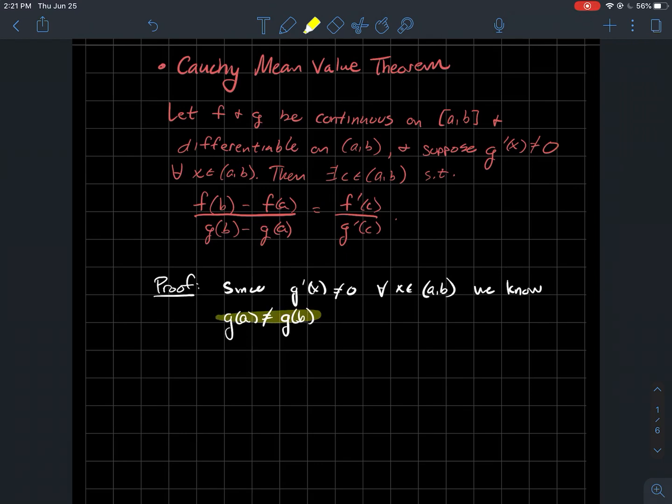Well, that guarantees that g of a can't be g of b. g can't have the same value at the endpoints of this interval here. If you think about why is that true? Well, what does Rolle's theorem say? Rolle's theorem told me that otherwise, what if g of a did equal g of b, then Rolle's theorem guaranteed that there's some x between a and b where the derivative equals zero.